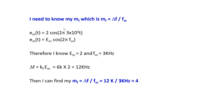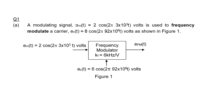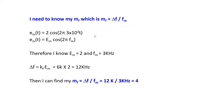This is the modulating signal — this part here is actually obtained from the question. From this part I can extract two important parameters. Comparing term by term, I know that my Em is equal to 2, and my fm is equal to 3 kilohertz. So I know Em equals 2 and the frequency of the modulating signal is 3 kilohertz.